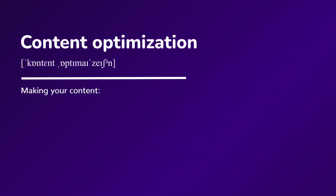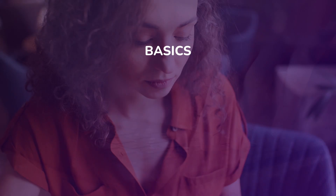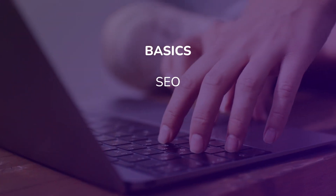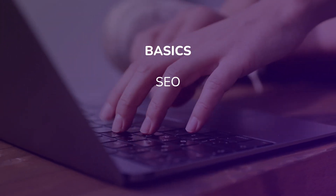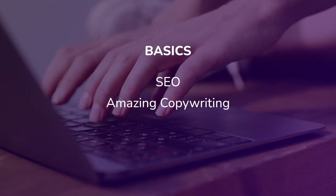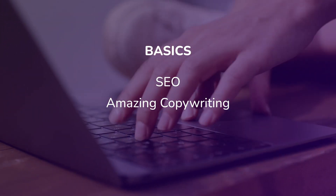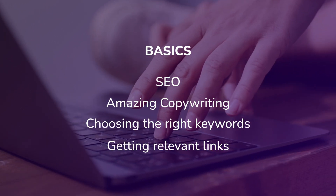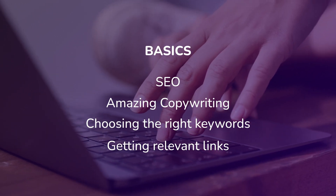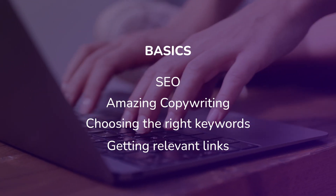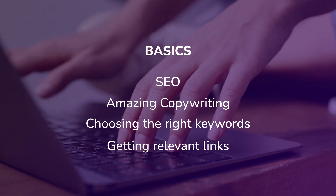It's basically making your content as legible, engaging, shareable, and valuable as possible. You can do this through, for example, SEO for Google and the rest of the search engine gang, amazing copywriting, choosing the right keywords, and by getting relevant links. The better optimized your website is, the better your chances of ranking on Google. Side note: internal links — they really work. How many times have you found yourself falling down a Wikipedia hole?